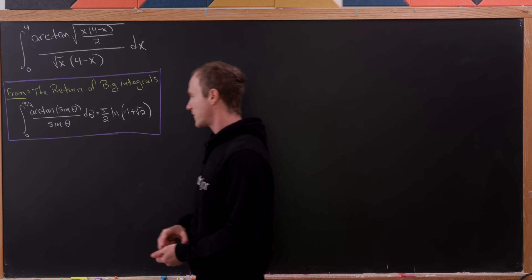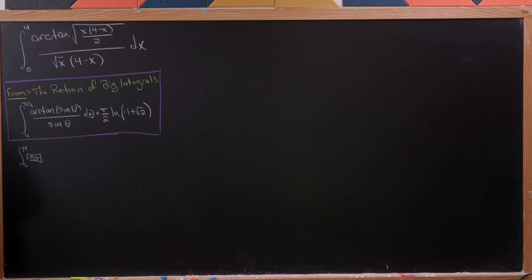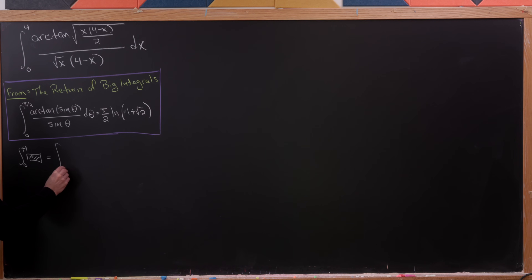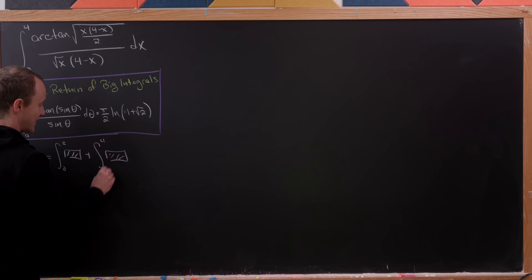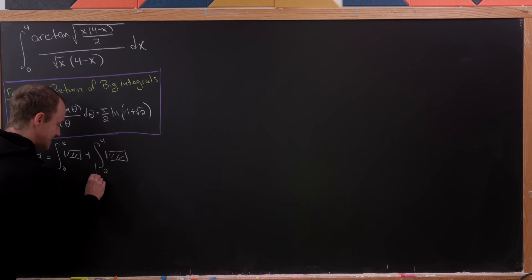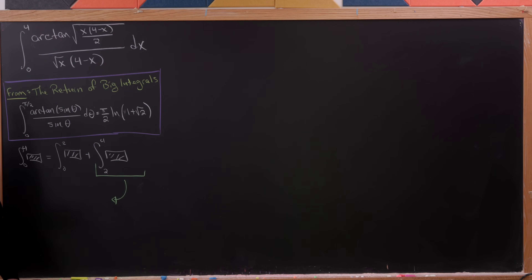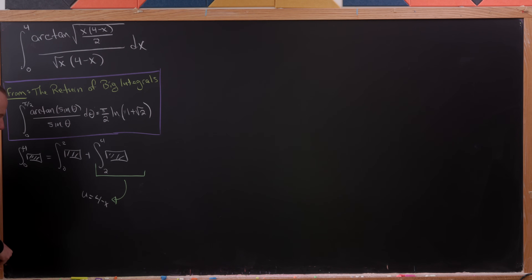The first thing we're going to do is take our integral from zero to four and split it up into the integral from zero to two plus the integral from two to four. We'll take that second piece, the integral from two to four, and apply the substitution u equals four minus x.